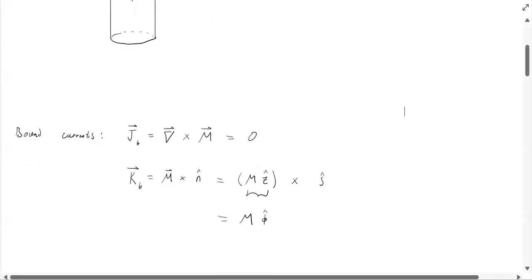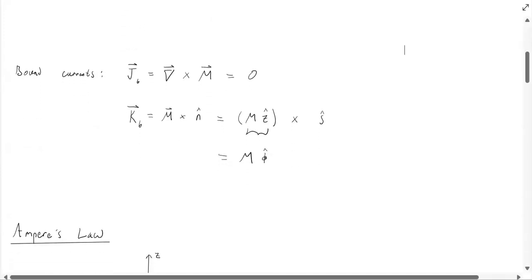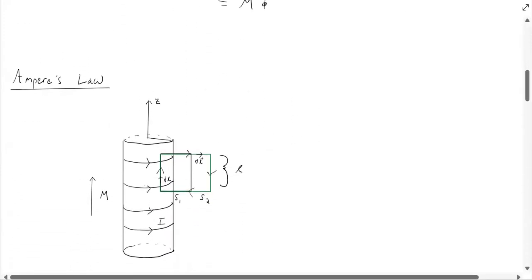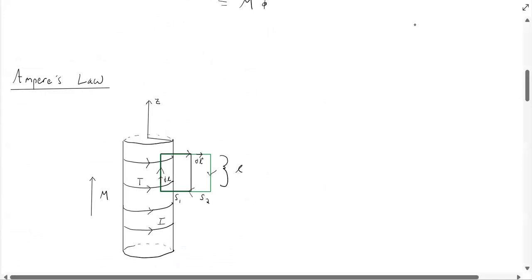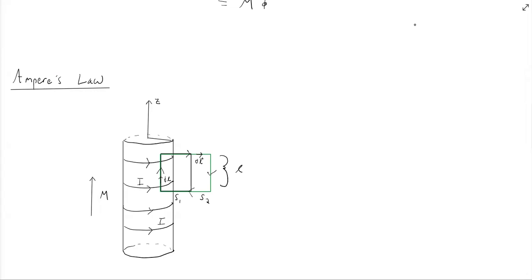Since the current points in the phi hat direction, we can treat this configuration as a solenoid. To better visualize this, we can think of this infinitely long cylinder as a solenoid with closely-wound coils, where each coil's current points in the phi hat direction. To proceed, we'll be using Ampere's law on this solenoid configuration.